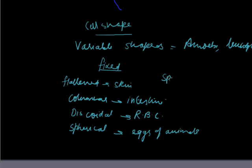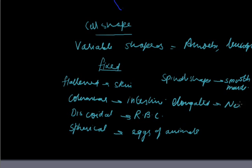The cells can be spindle shaped as it is seen in the case of smooth muscle fiber. Cells can be elongated as it is a case of nerve cell which is also called as neuron. So these were the different fixed shapes of the cells.